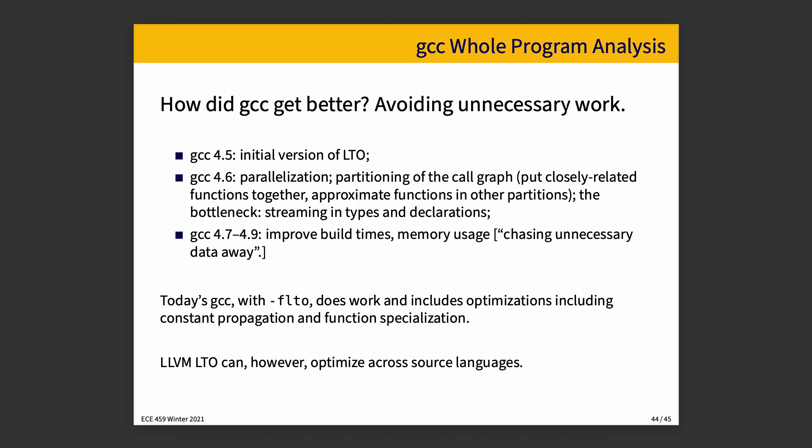How did GCC get better at this? Its main strategy is avoiding unnecessary work. GCC version 4.5 had the initial version of link time optimization. They improved on it in 4.6 by parallelization: partitioning the call graph, putting closely related functions together, and approximating functions that belong to other segments so we don't have to be as precise about them. The bottleneck is figuring out all the different types and their declarations. In subsequent versions 4.7 to 4.9, build times were improved, partly by reducing memory usage — basically not keeping anything in memory that doesn't have to be there.